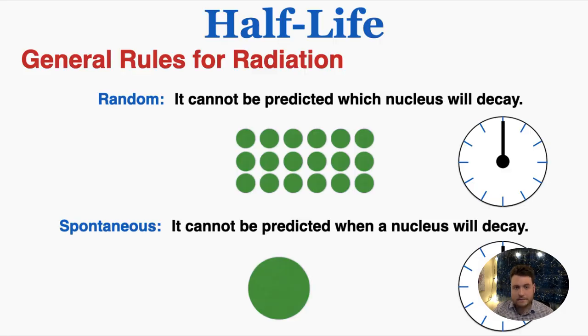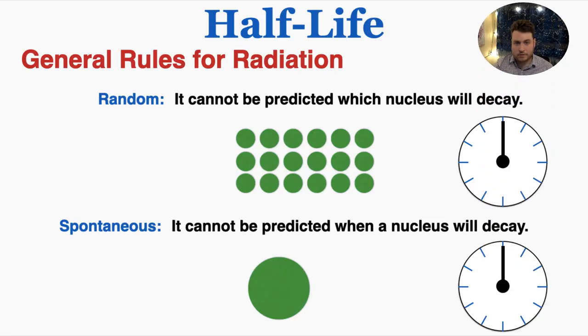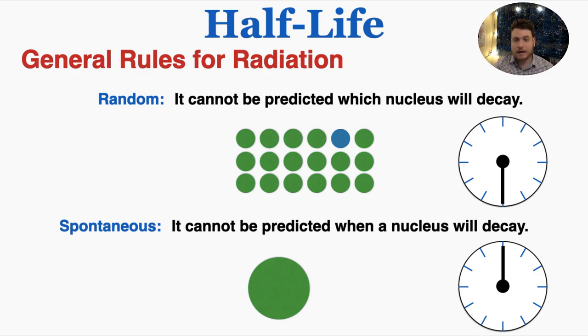This lecture is about half-life. Before we talk about half-life, I want to remind you that when we're talking about nuclear radiation, nuclear radiation is random, which means it can't be predicted which nucleus in a radioactive substance will decay.